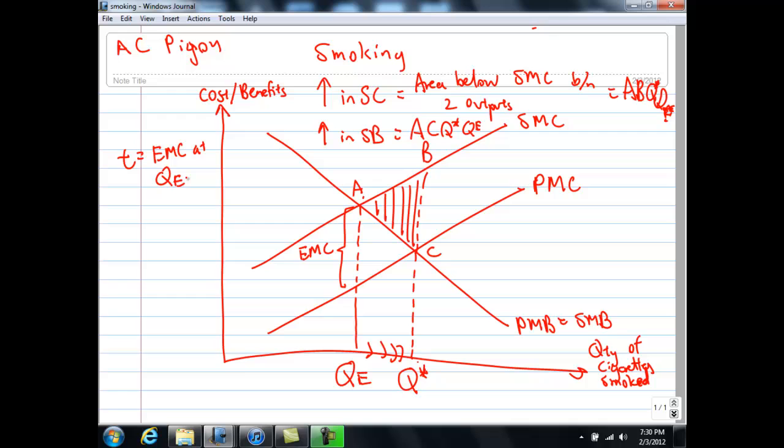Now what this tax does is to add to the private marginal cost. So when the government imposed a tax on cigarettes, what it does is to shift the private marginal cost curve up by the EMC. So this is actually the same as PMC plus tax. Let me call this PMC prime.